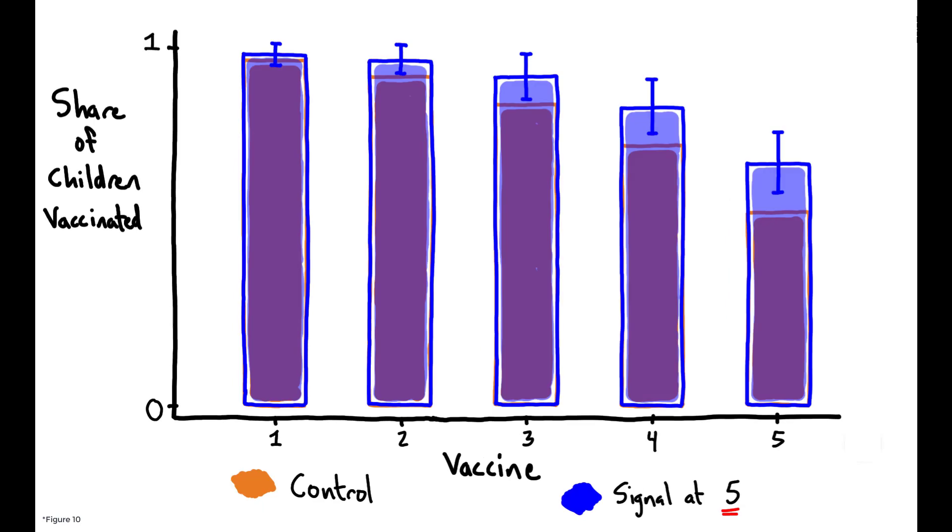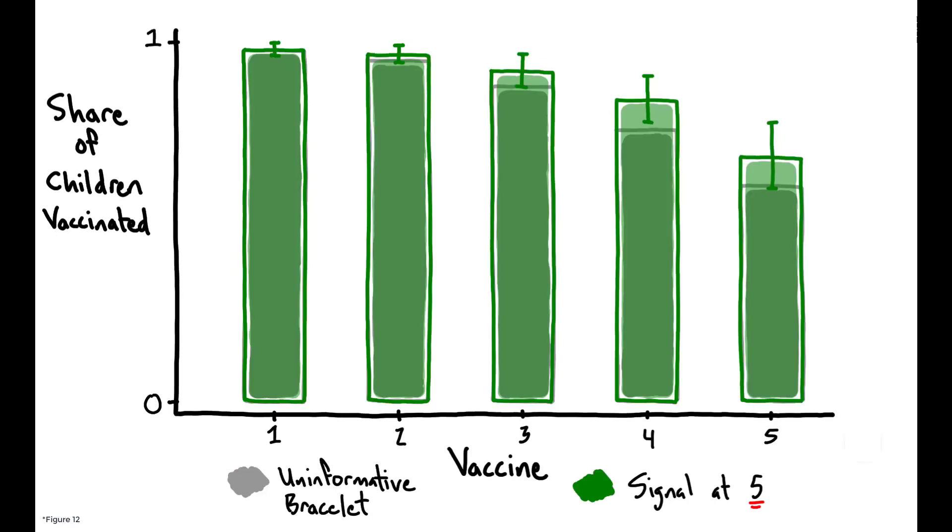Moreover, the effects of signal at five remain large and significant when compared to those of the uninformative bracelet, indicating that the results are driven by the signaling aspect of the bracelets, rather than by the act of receiving a bracelet at all.